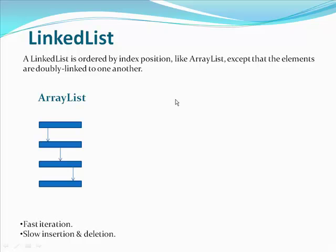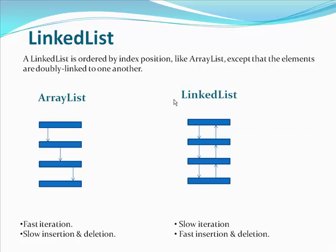On the left side, you can see the ArrayList. Each element has a single reference. Because of that implementation, there is fast iteration and slow insertion and deletion. On the right side, you can see the LinkedList. In there, all the elements have two references. Because of that implementation, there is slow iteration, but fast insertion and deletion.